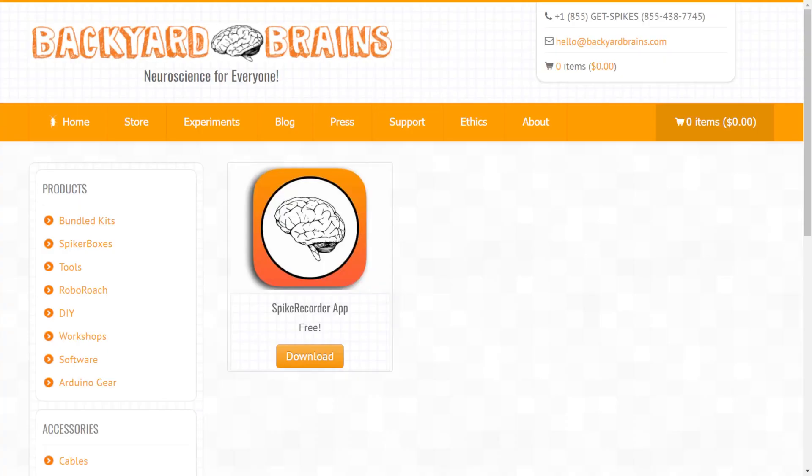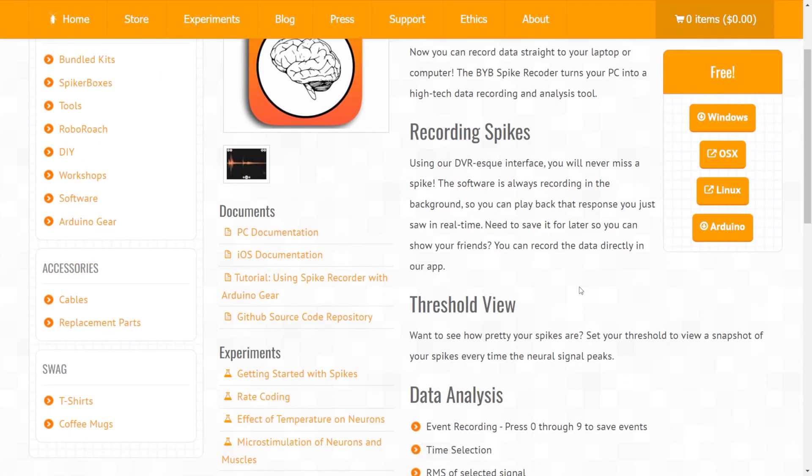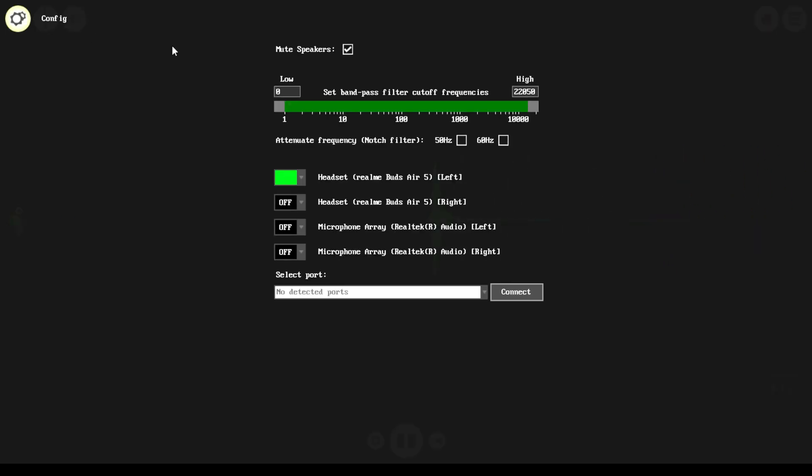Install the Backyard Brains Spike Recorder app as per the operating system you are using and install it in your laptop. The download link of the Spike Recorder can be found in the description box below. Open the software, click the settings icon on the top right corner, and set the low bandpass filter to 72 hertz and the high bandpass filter to 720 hertz.